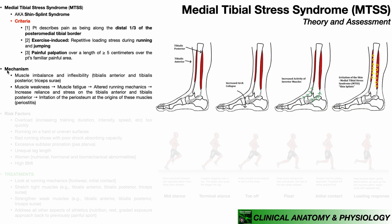What is the mechanism of medial tibial stress syndrome? The exact mechanism is under debate, but one of the most plausible explanations is muscle imbalance in terms of strength and inflexibility. We're mainly thinking about muscles like the tibialis anterior and posterior, and also the triceps surae group, which contains the gastrocnemius and soleus. Let's take running as an example.